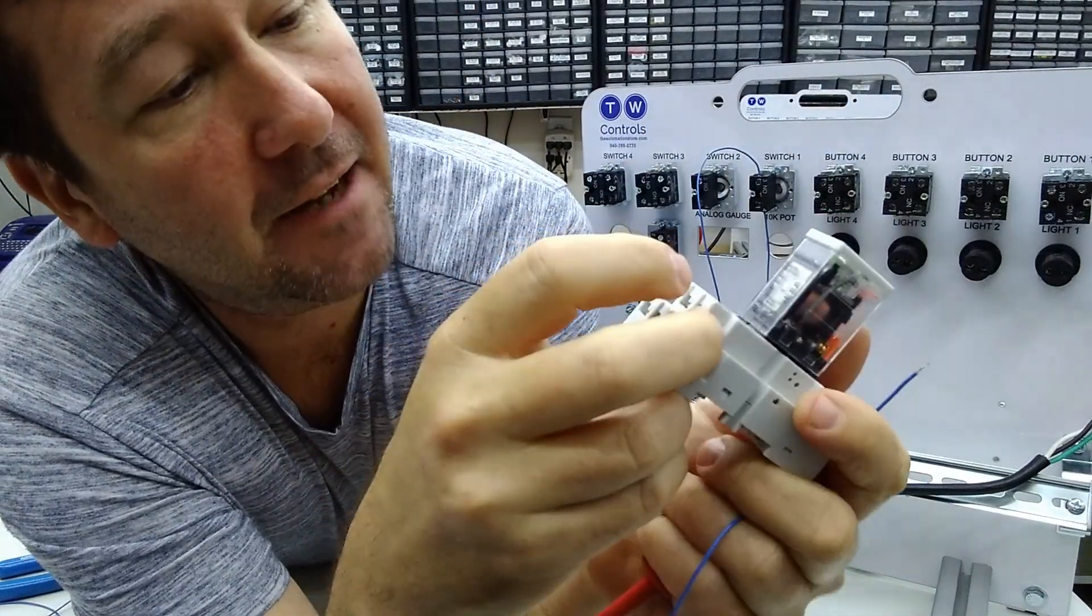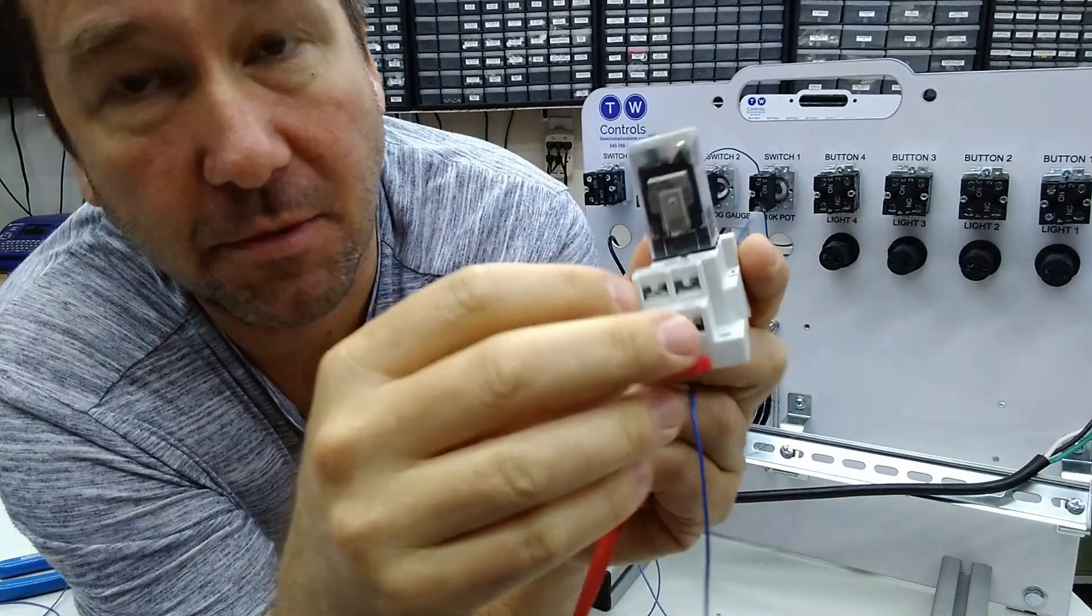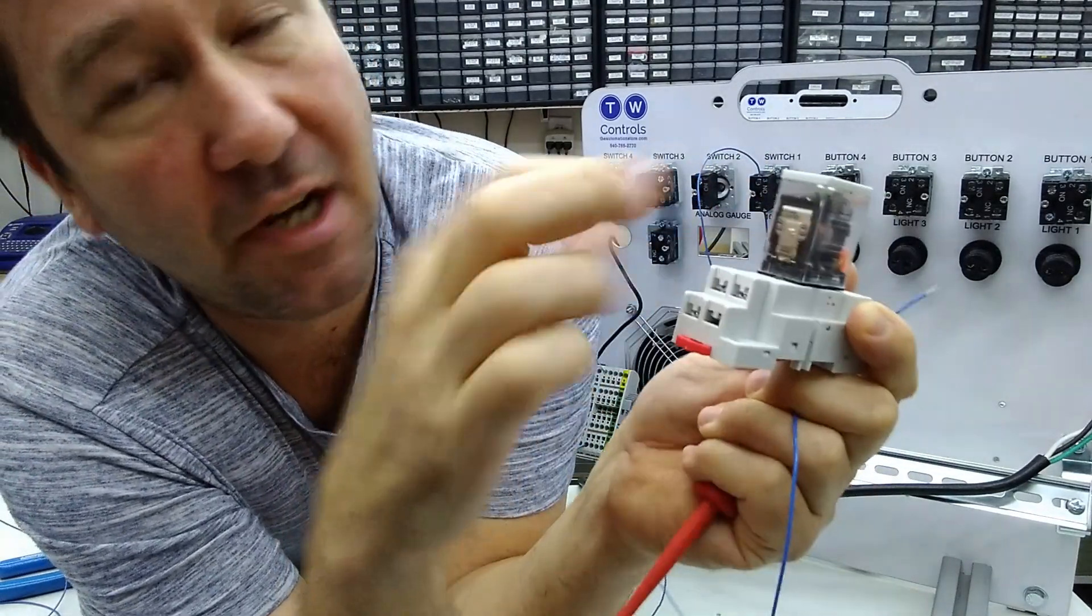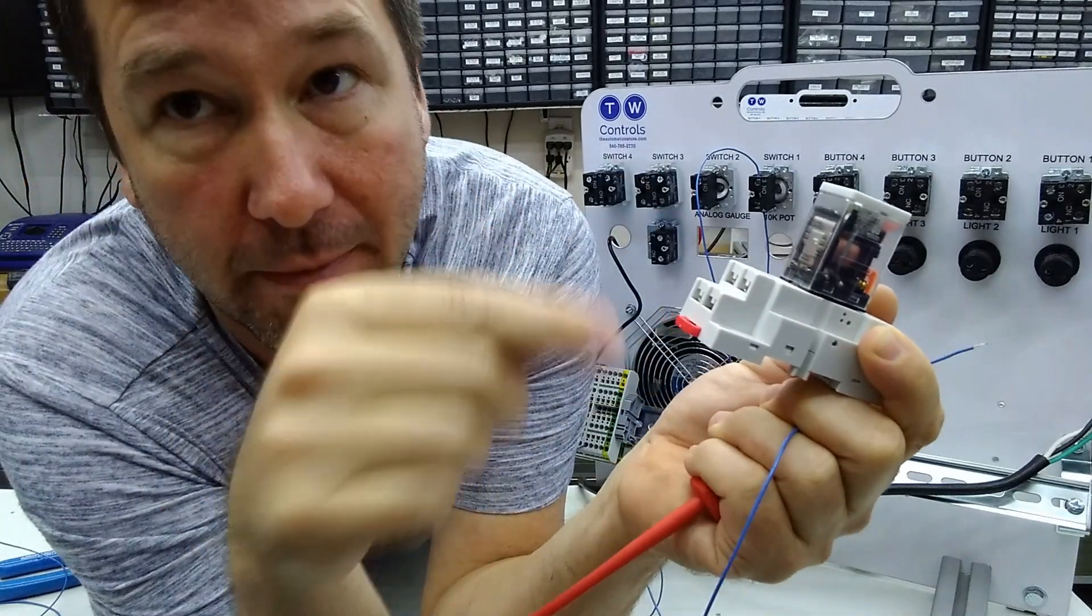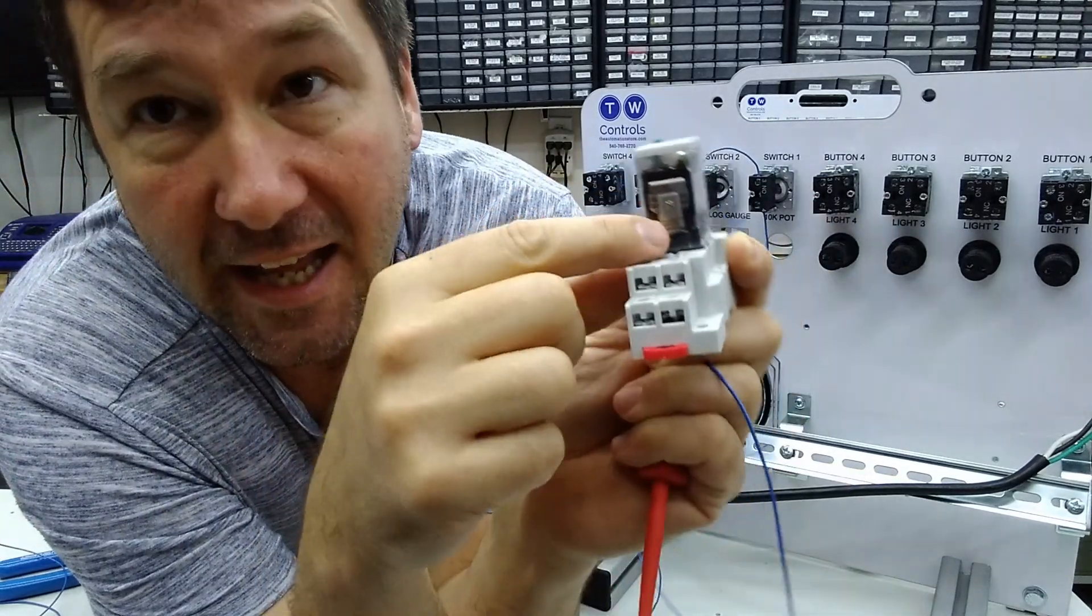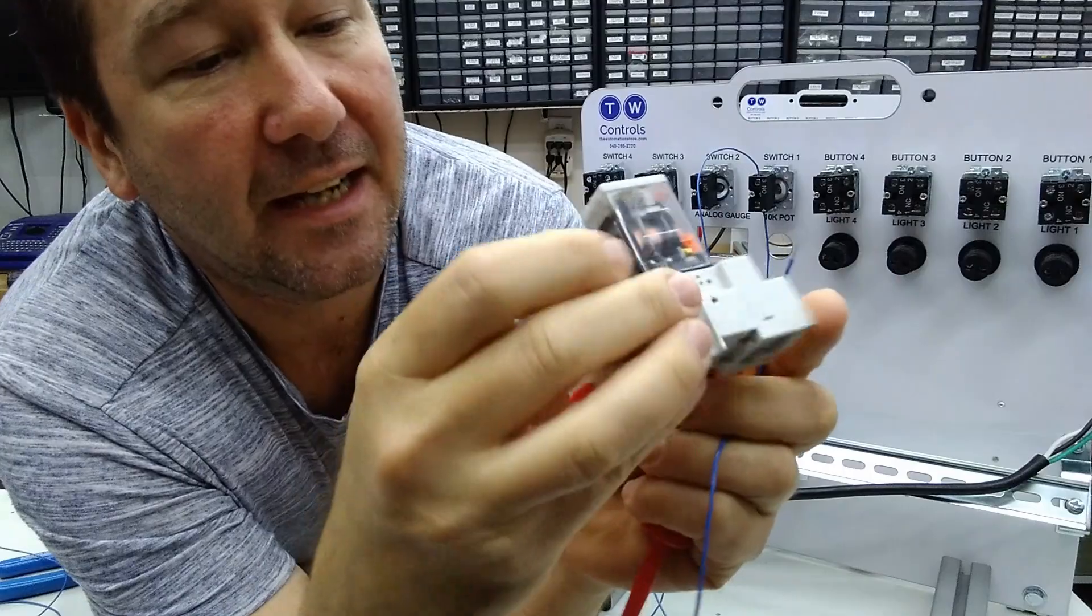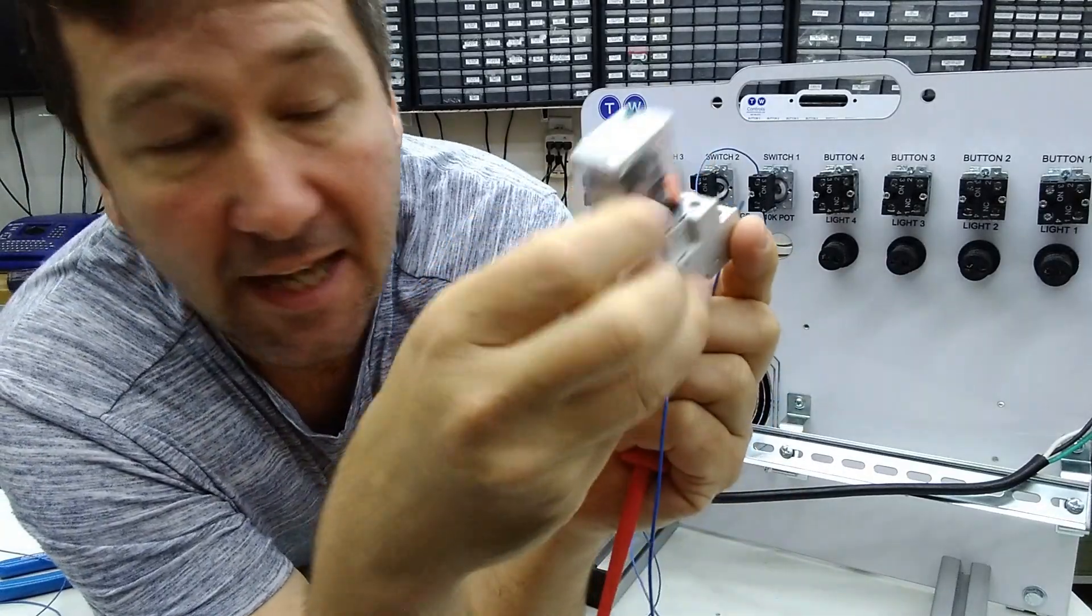You'll have to look at the diagram and figure out which one of these terminals is which, but usually you'll see a symbol for wire being curled up, and that is the coil. And in this case, it is A1 and A2.